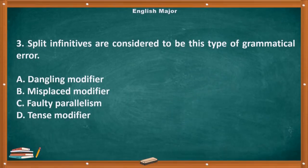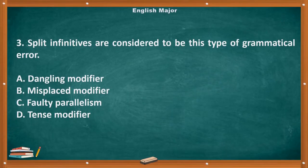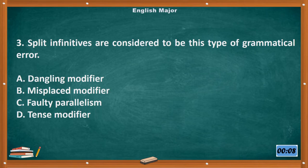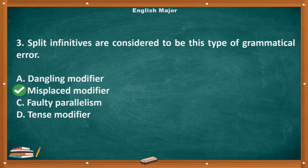Question number 3. Split infinitives are considered to be this type of grammatical error. A. Dangling modifier. B. Misplaced modifier. C. Faulty parallelism. D. Tense modifier. The correct answer is letter B, Misplaced modifier.